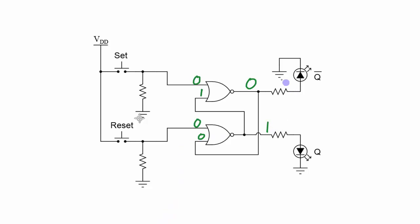Now starting in the output set state with the inputs both at 0, let's change the reset. Let's push the reset button in, change it to a 1. So we push the reset button in, this signal here becomes a 1. 1 NORD with 0 becomes a 0.